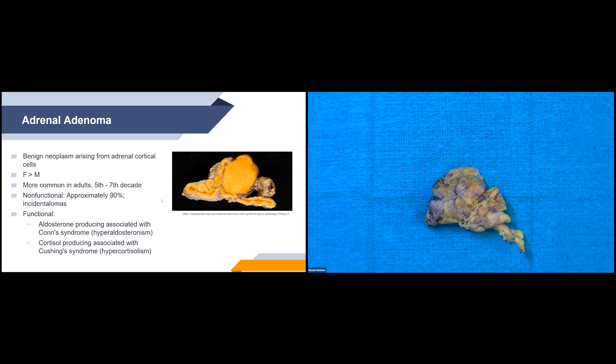Functional adenomas can be aldosterone-producing, associated with Conn syndrome, or cortisol-producing, associated with Cushing syndrome. For gross features, it's typically unilateral, solitary, and golden yellow. The weight is typically less than 50 grams and the size is less than 5 centimeters. You can see on the image that homogeneous yellow mass.